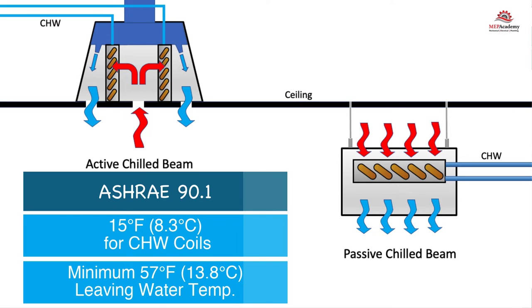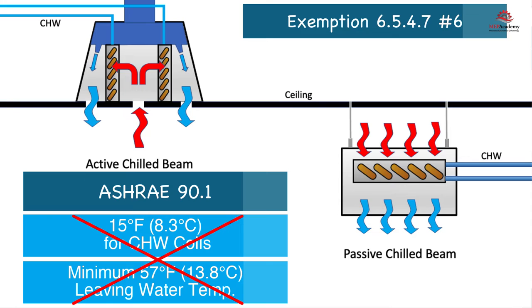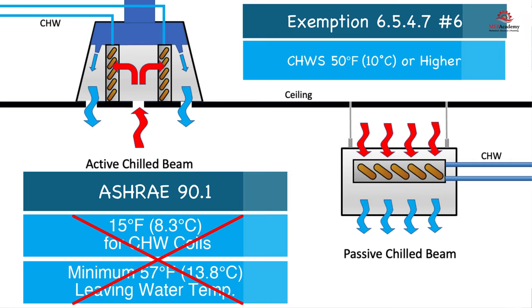The smaller delta T requires greater flow compared to a typical VAV chilled water coil under ASHRAE 90.1, which requires a 15 degree Fahrenheit (8.3 degrees Celsius) temperature difference between supply and return, with a minimum leaving water temperature of 57 degrees Fahrenheit (13.8 degrees Celsius). Chilled beams are excluded from these mandatory delta T requirements of ASHRAE 90.1; exception 6.5.4.7 number 6 states that coils with design entering chilled water temperatures of 50 degrees Fahrenheit (10 degrees Celsius) and higher are exempt.